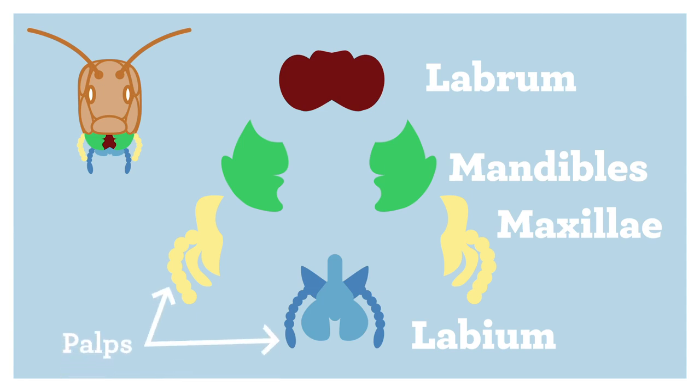You'll see different palps attached to some of our insect mouths so that they can taste things before they bite them. Today we're going to be feeding scavengers, herbivores, and carnivores.